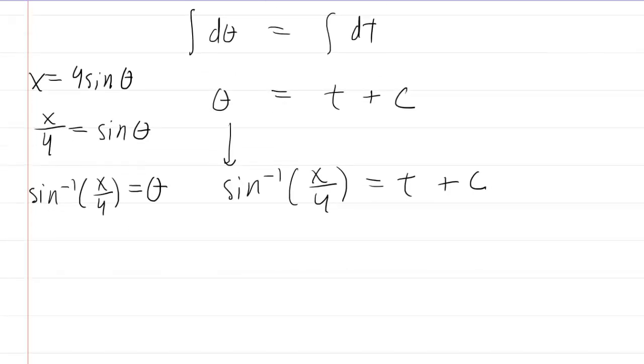Now what we'll do is, for simplicity, just let C, the constant of integration, equal 0. In many problems you would be given enough information to actually solve for C, but here we're going to assume that's just equal to 0. Then to solve this for x, we'll take the sine on both sides.